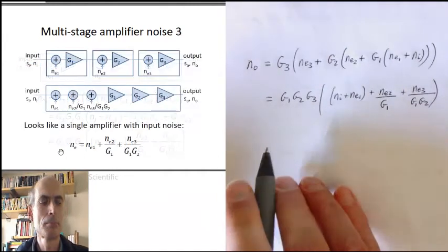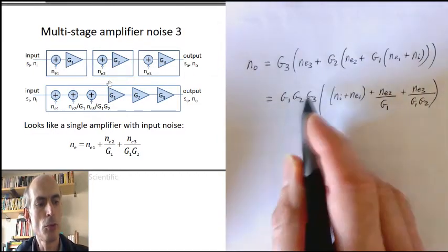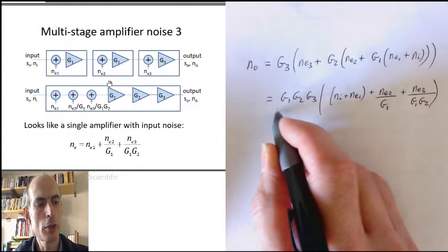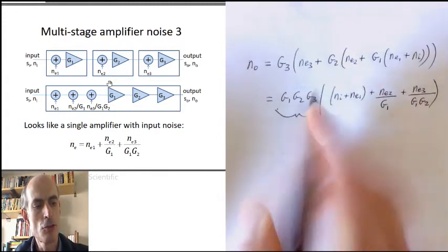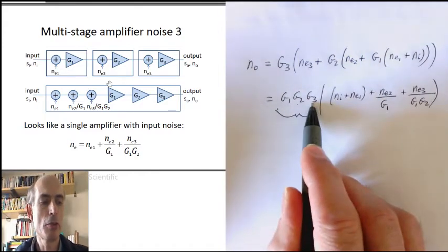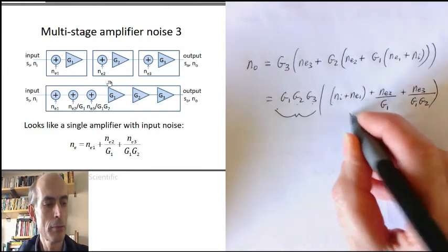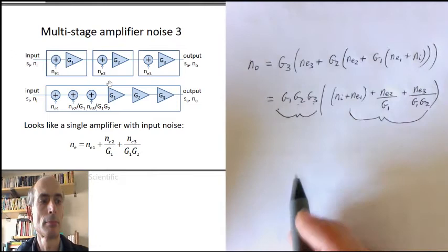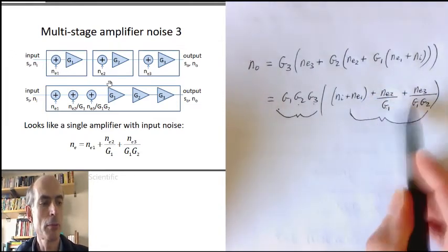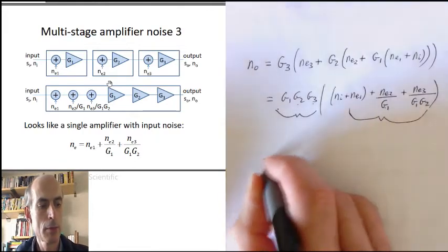Because if we consider the amplifier like this, we could note that this is what we would expect if we had an amplifier of gain G1 times G2 times G3, which had an equivalent input noise of this. NE1 plus NE2 over G1 plus NE3 over G1 G2, it's just this.